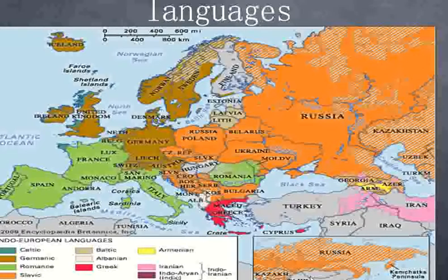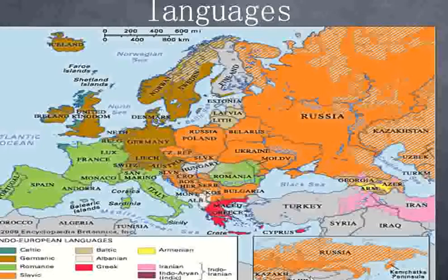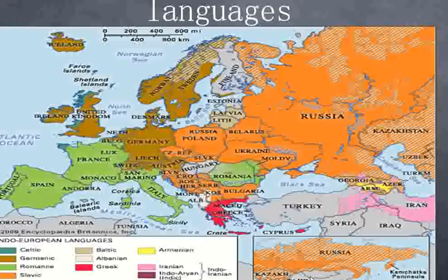Besides that, we can see various language regions on this map. The Celtic languages are shown in a green shade, and the Romance languages are in light green, covering Portugal, Spain, Italy, and San Marino. Additionally, a large part of Russia corresponds to the Slavic language region, where people used to speak Slavic languages.